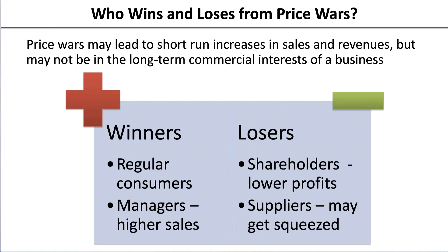Managers are winners too — higher sales generated may help a manager earn bonuses or commission, meaning higher incomes. Losers include shareholders: if a price war breaks out and each unit sells for a lower price, the business earns lower profit, meaning lower dividend values. Finally, suppliers are also losers — based on the earlier example, they may get squeezed and in the long run risk going out of business if the price they receive doesn't cover their costs of production.